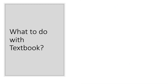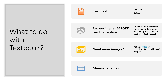So what do you do with the textbook? You read the text. I recommend doing an overview of whatever you're going to be studying and then going back and learning the details. Review the images before you read the caption — once you've described the image and come up with a diagnosis, read the caption to test yourself. If you need more images, Robbins' Atlas of Pathology has lots of images. Another thing you should do with your textbook is memorize the tables.